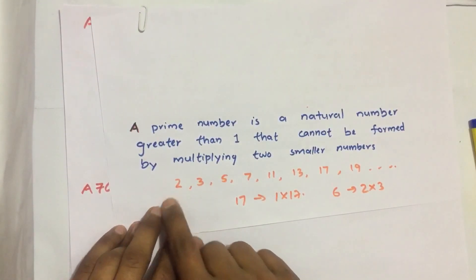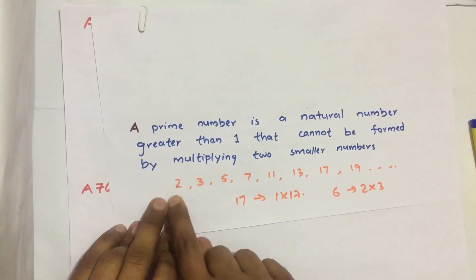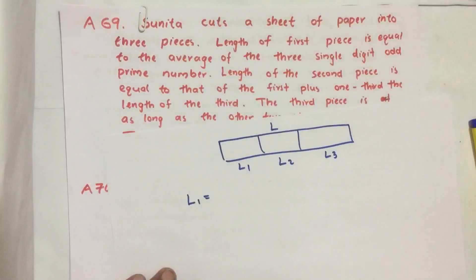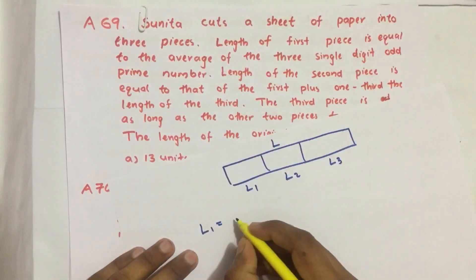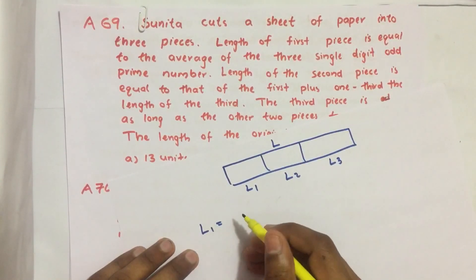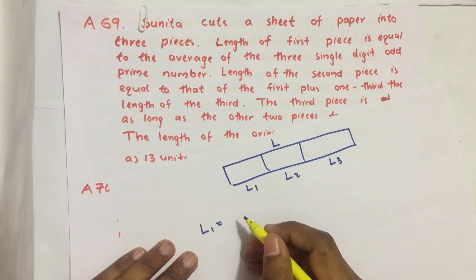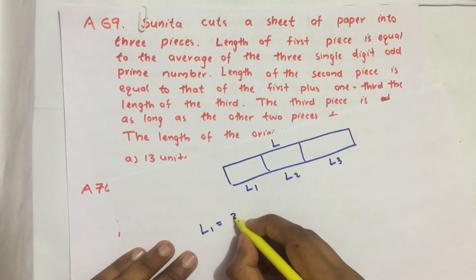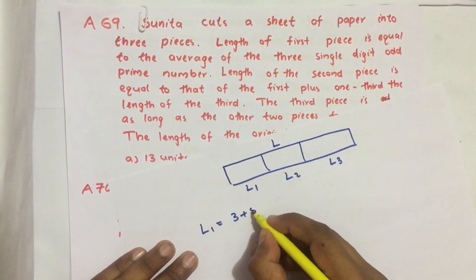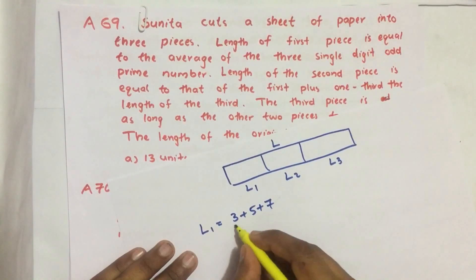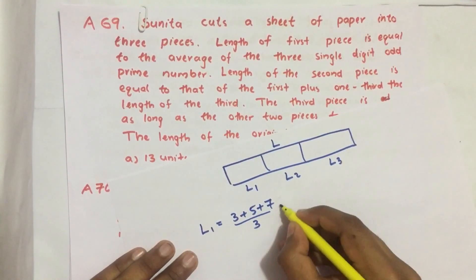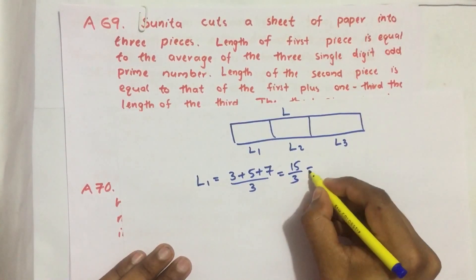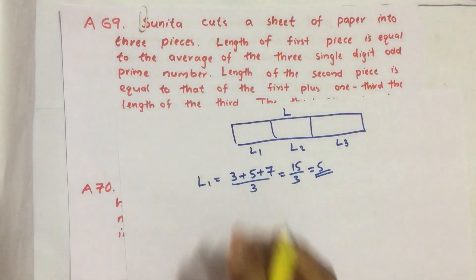Odd prime number means we exclude 2, so the three odd single digit prime numbers are 3, 5, and 7. Therefore L1 equals the average of 3, 5, and 7, which is (3 + 5 + 7) divided by 3, equal to 15 divided by 3, equal to 5. So we got L1 equal to 5.